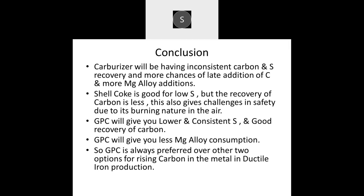Conclusion: Carburizer has inconsistent carbon and sulfur recovery, more chances of late addition of carbon, more magnesium alloy addition, higher power consumption, and lower productivity. Shell Coke is good for low sulfur content, but its very low carbon recovery affects productivity and power consumption, and it gives safety challenges due to its burning nature in air. GPC gives lower and consistent sulfur and carbon recovery, and also reduces magnesium alloy consumption because of its low sulfur content. Therefore, GPC is always preferred over the other two options for raising carbon in the metal in ductile iron production.